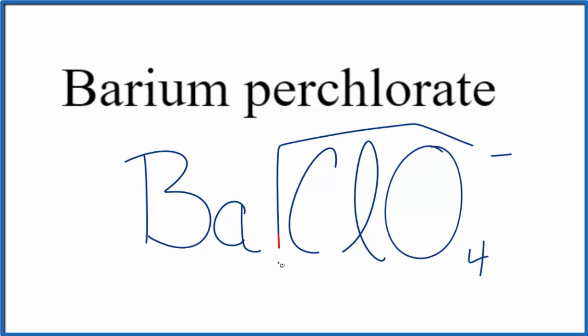We know the whole perchlorate here is 1 minus. Barium's in group 2 on the periodic table, it forms ions that are 2 plus. So we really need 2 of these perchlorate ions here. 2 times 1 minus, that gives us 2 minus, that balances out the 2 plus.